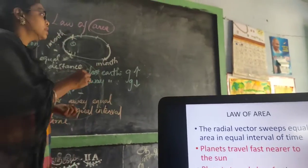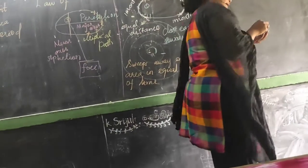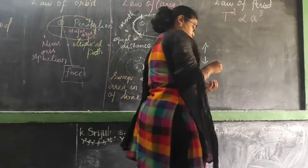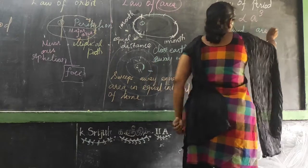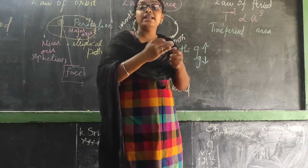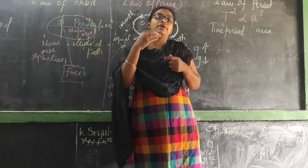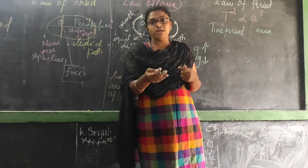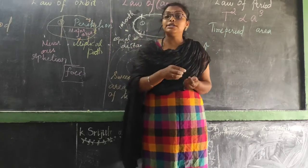Next we are going to start the third law which is the law of period. Period means generally we use this word for time period. The formula is: T squared is directly proportional to A cubed. Here T is the time period and A is the semi-major axis. If area increases, the time also increases along with that — for example, if I want to reach 1 kilometer within 2 minutes, to go 2 kilometers it will take another 2 more minutes, and for 3 kilometers another 2 more minutes.